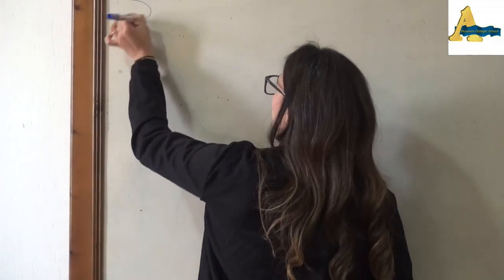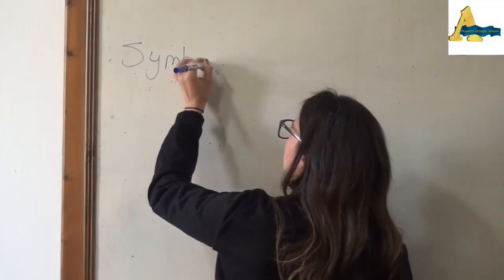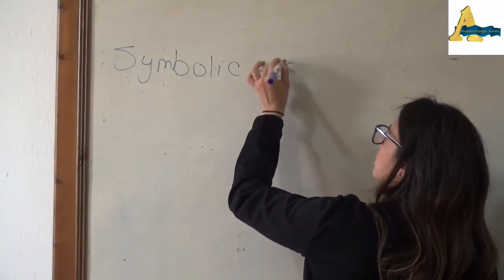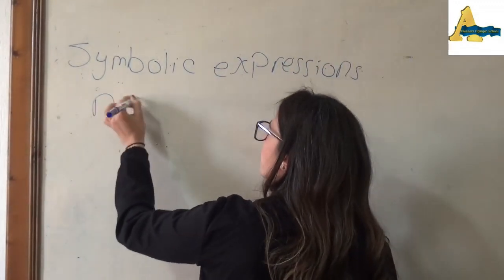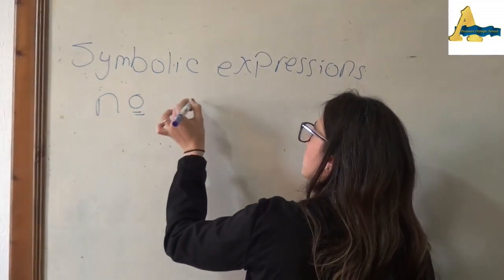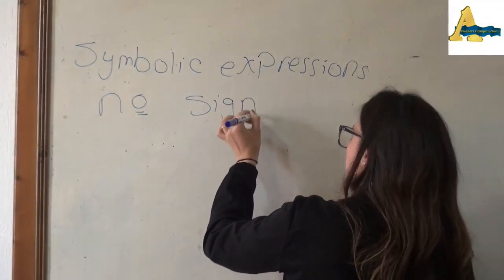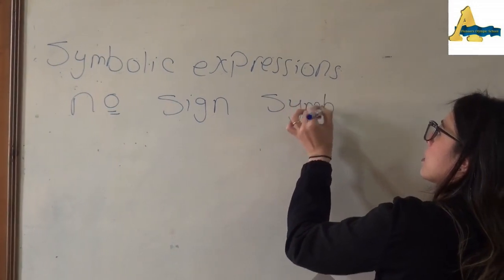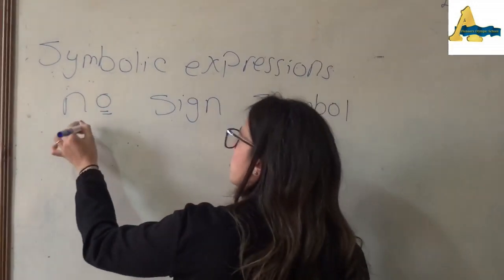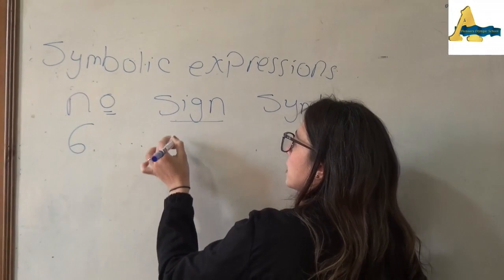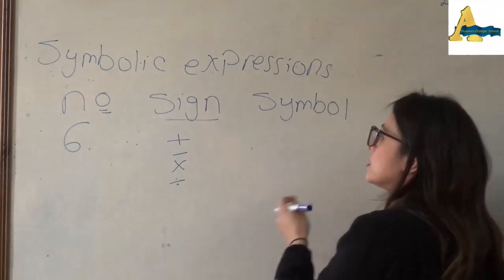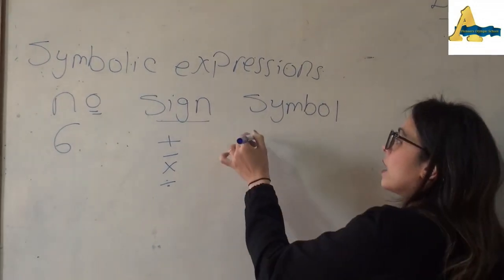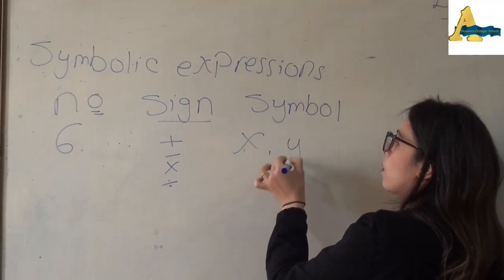Let's start. First, I have to know the meaning of symbolic expression. A symbolic expression contains a number, a sign, and a symbol. A number — any number, for example 6. The sign can be plus, minus, times, divided — any sign. And the symbol can be any letter, for example x, y, z, and so on.